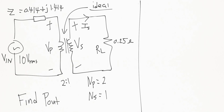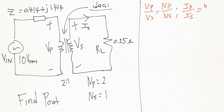The main equations we need to know to solve this problem are: first, the relationship between the primary and secondary voltages of the transformer and the turns ratio Np over Ns — that's important equation number one. The second is the relationship between the primary and secondary current of the transformer and the turns ratio.